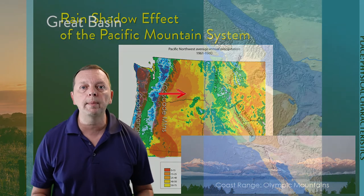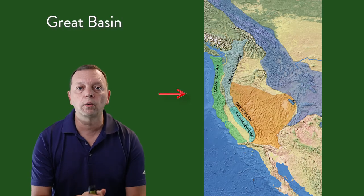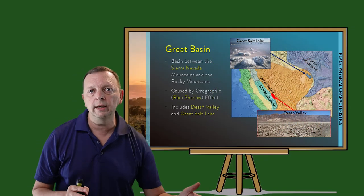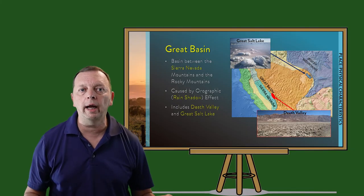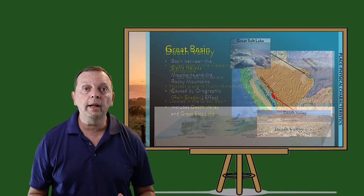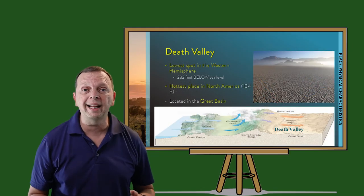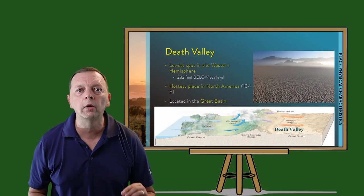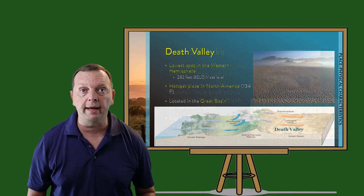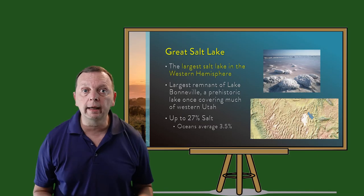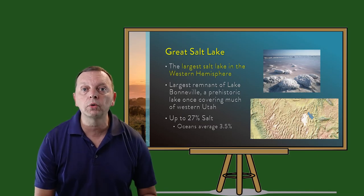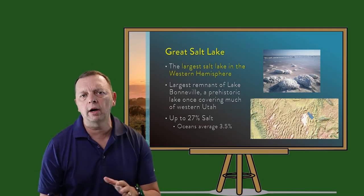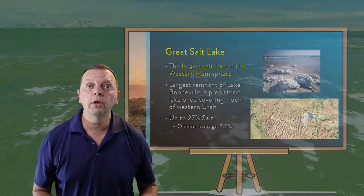Another example of the rain shadow effect is the Great Basin, which sits between the Sierra Nevadas and the Rocky Mountains. Blocked by these mountains to the east and west, the Great Basin is an arid area that includes Death Valley. Death Valley is not only the lowest point in the western hemisphere at 282 feet below sea level, but it is also the hottest place in North America, once registering a temperature of 134 degrees. The Great Basin is also home to the Great Salt Lake, which is the last remaining part of a prehistoric lake once known as Lake Bonneville, which once covered what is today western Utah.